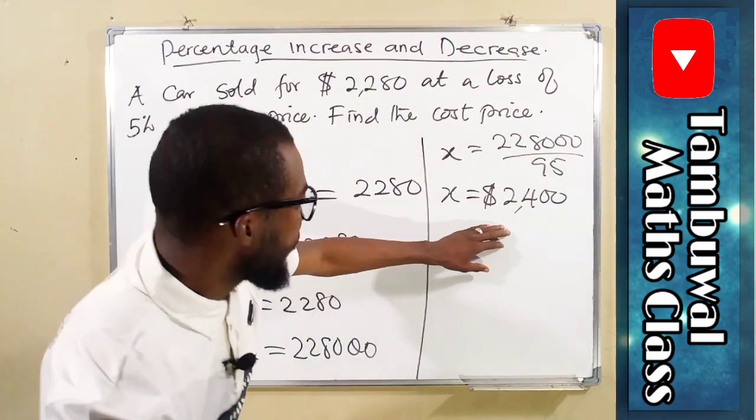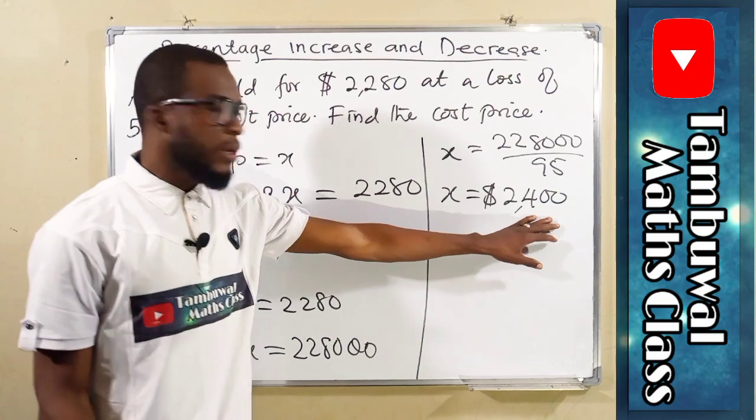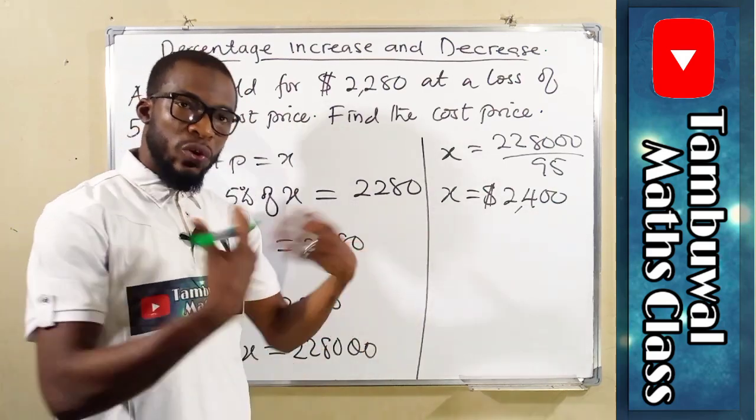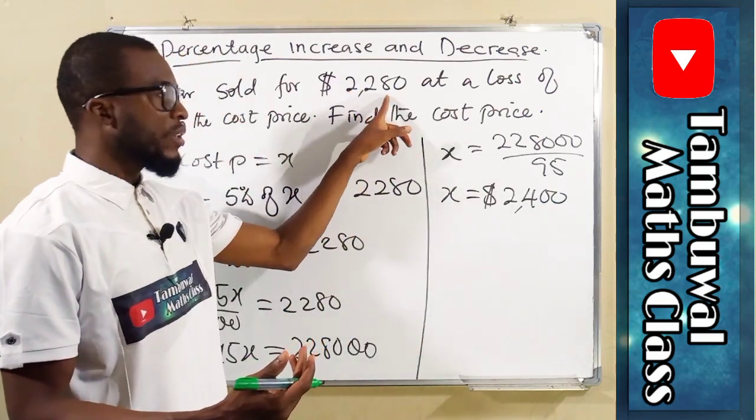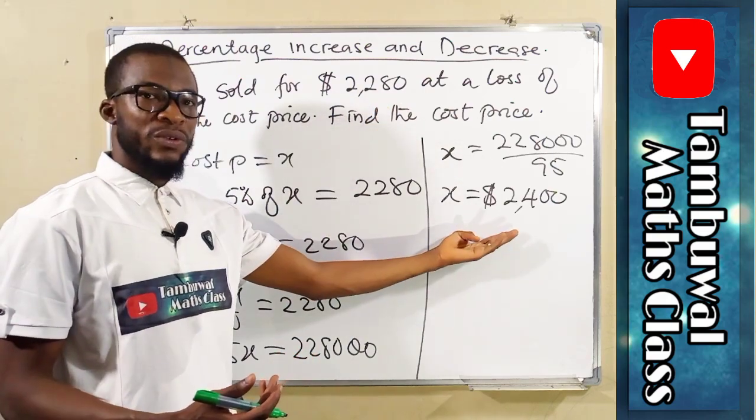So this was the cost price, $2,400, but later on sold at a lower price, which is 2,280, so there is a loss.